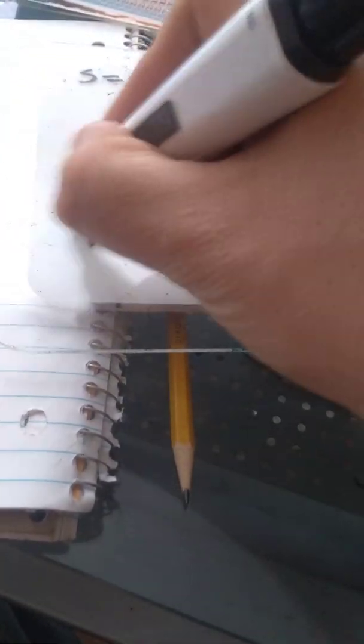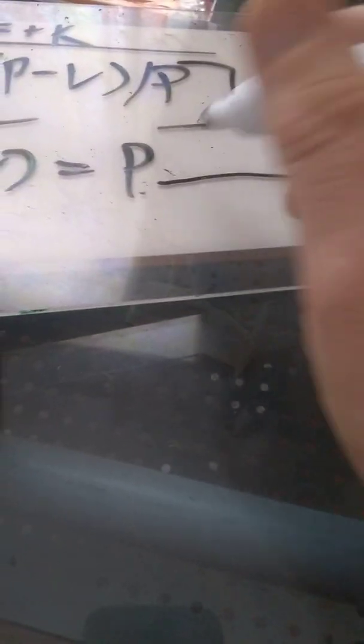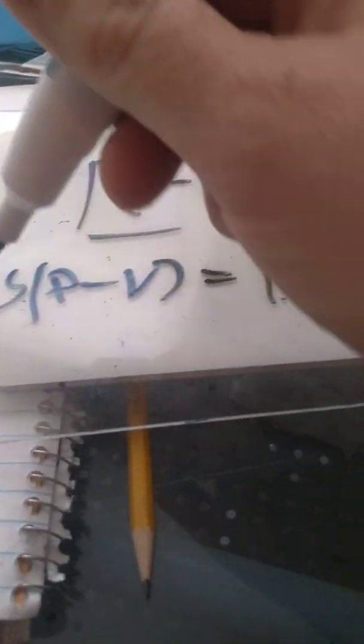So that we have p times s times p minus variable cost equal to p times capital plus f. You could have it in either direction.